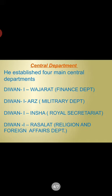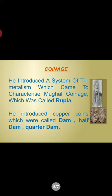The central government had four main departments: Diwane Vazarat, the Finance Department; Diwane Arz, the Military Department; Diwane Insha, the Royal Secretariat; and Diwane Rasalat, the Religion and Foreign Affairs Department.